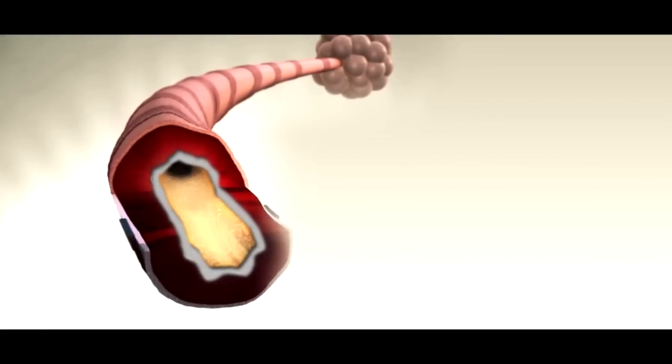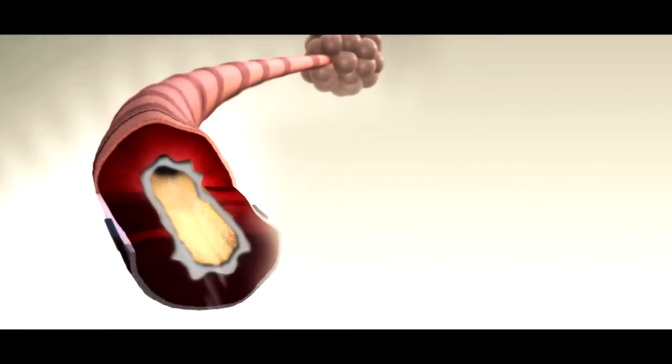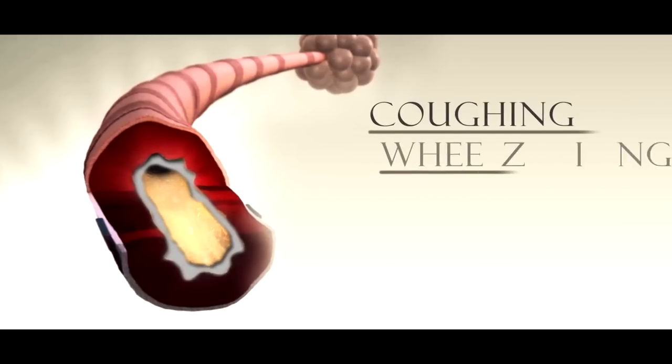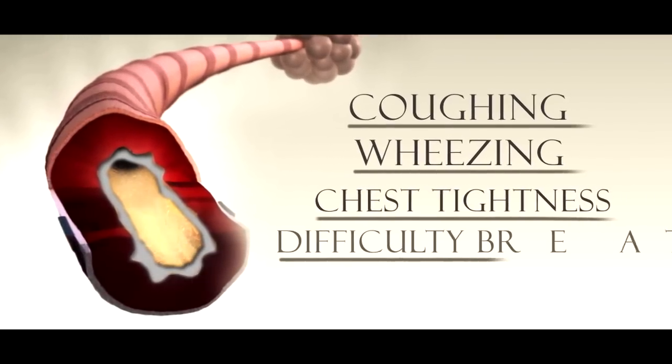During an asthma attack, the degree of bronchoconstriction is even higher. As a result, asthmatics suffer from coughing, wheezing, whistling or rattling sounds in the chest, chest tightness, and difficulty breathing.